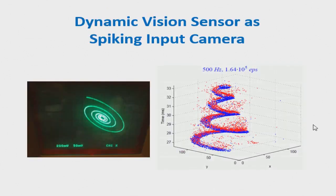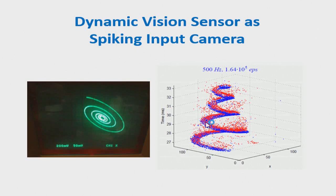As input to our system we will use a dynamic vision sensor. Each pixel in the x-y plane generates an event when there is a change of light. For example, we have a recording of a retina observing a 500 Hz spiral on an analog oscilloscope. In just five milliseconds — from millisecond 27 to 33 — we get a bunch of events describing the trajectory. Red events are one polarity, blue events are the opposite polarity. This retina was generating 164,000 events per second observing this spiral.